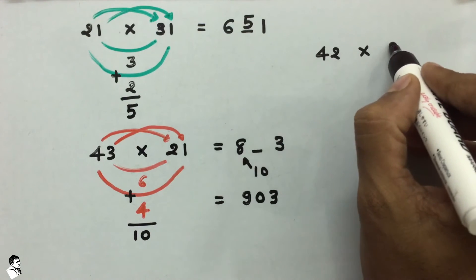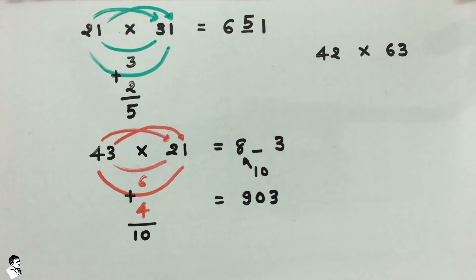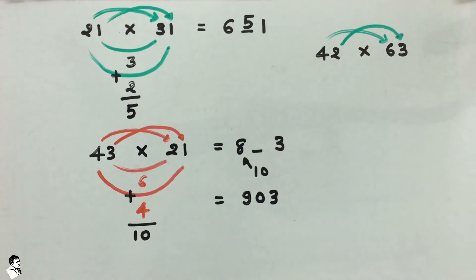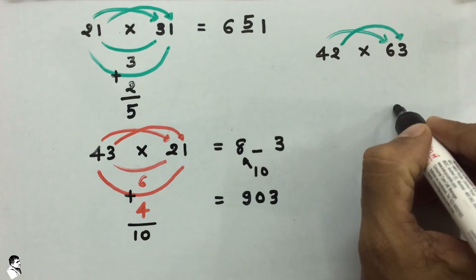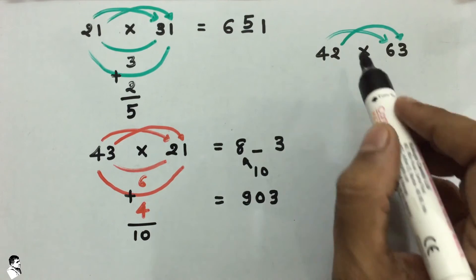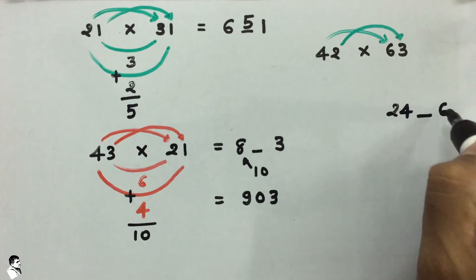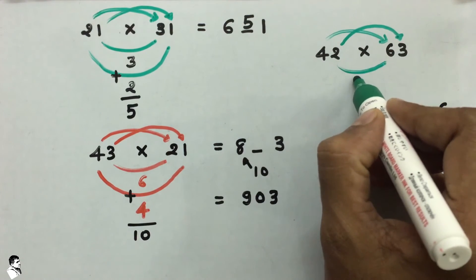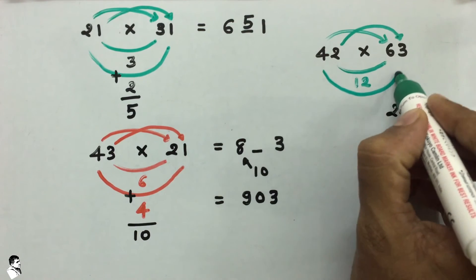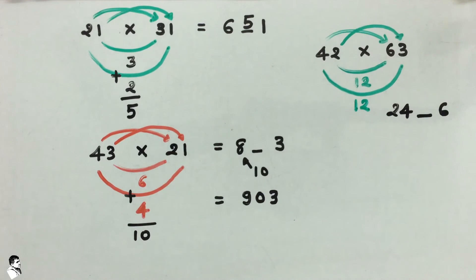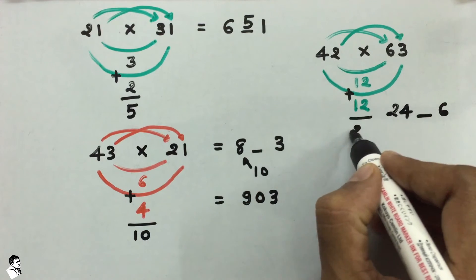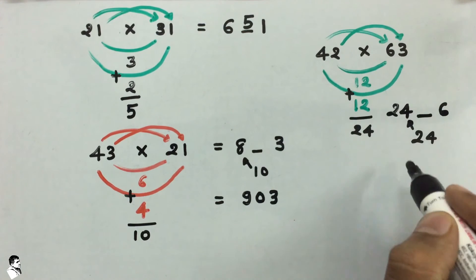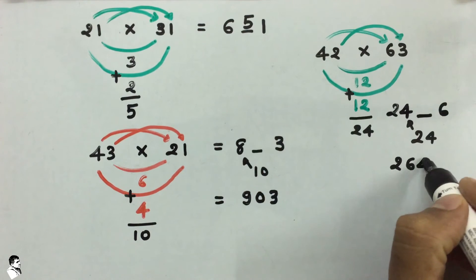For a third example: 42 multiplied by 63. First, 4 into 6 is 24 — write 24 — and 2 into 3 is 6. For the middle digits: 2 into 6 is 12, and 4 into 3 is also 12. The sum is 24; carry the 2 forward to the previous digit. The answer is 2646.